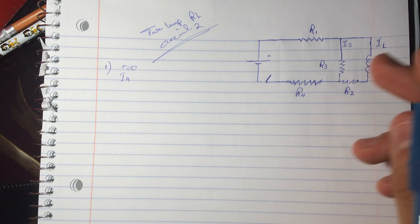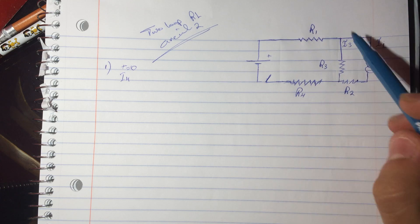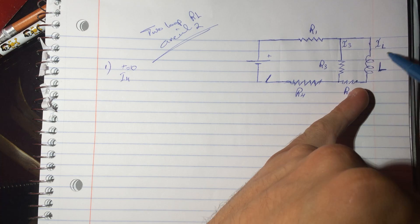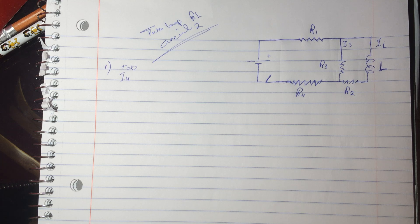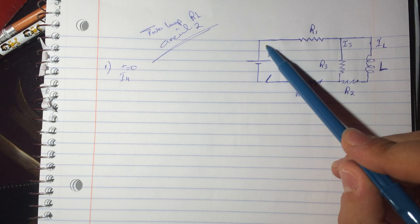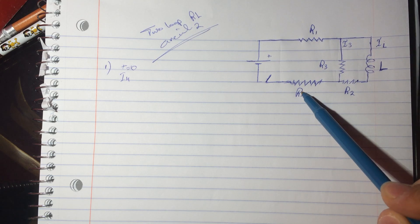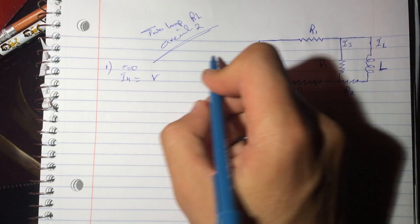At t equals 0, when we close the switch, the inductor will act like an infinite resistance because di/dt is at its maximum. So no current flows through the inductor — the only current flows through R1, R3, and R4.